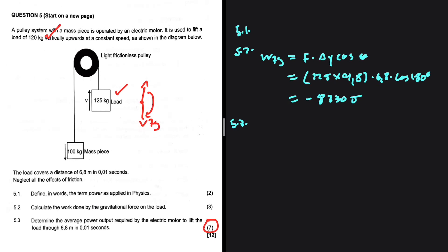So we can set up our equation in the following way: work net equals change in EK. If it is constant velocity, then change in EK is obviously going to be close to zero.